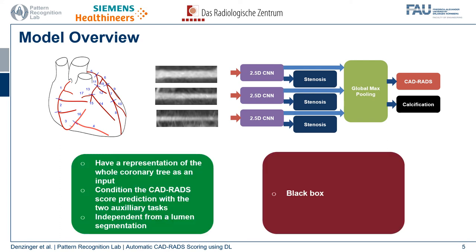Summarizing, our approach leverages a data representation of the whole coronary tree as input. It uses two auxiliary tasks in a multi-task setup to condition the CAD-RADS score prediction and guide network learning in the right direction. A major advantage of this approach is its independence from lumen segmentation, which is time-consuming, often requires manual correction, and is a potential source of error.